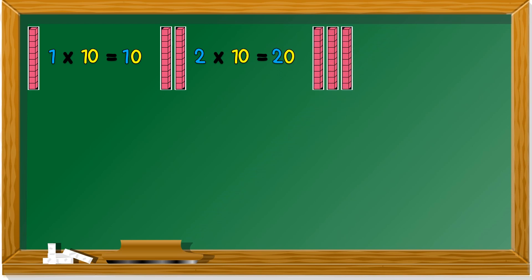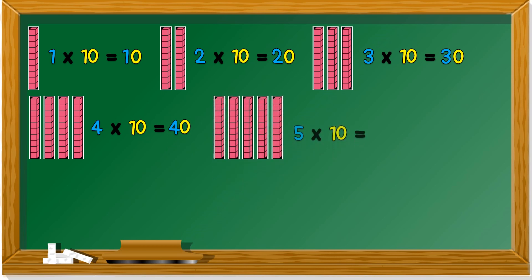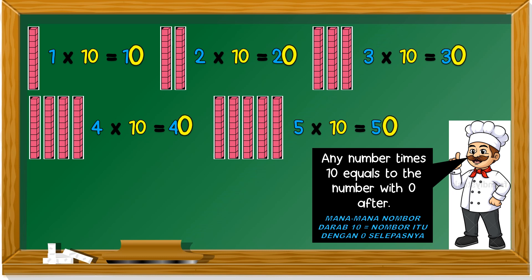How about three? Three sets — three times ten is 30. Same goes for four — four times 10 is 40. Five times ten gives us 50. Any number that times 10 equals the number with a zero after it. Mana-mana nombor darab dengan 10 sama dengan nombor itu dengan sifar selepasnya. So if we get 10 times 10, we get 100 — that is 10 plus another zero.